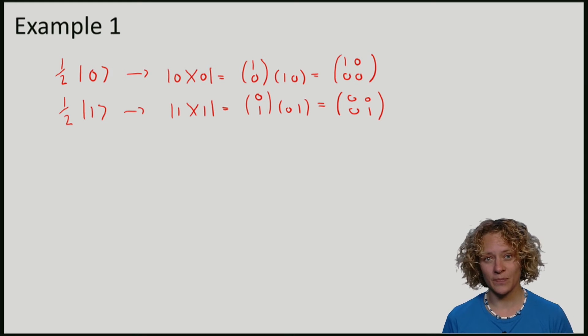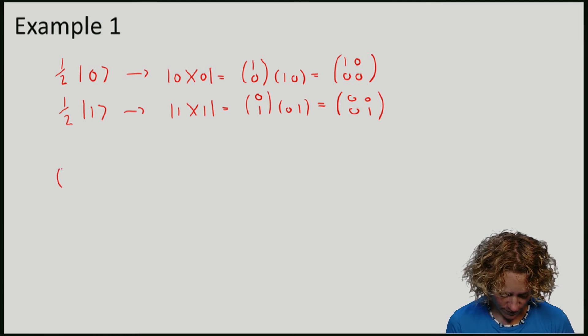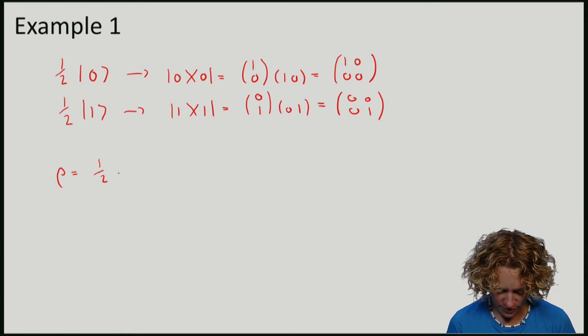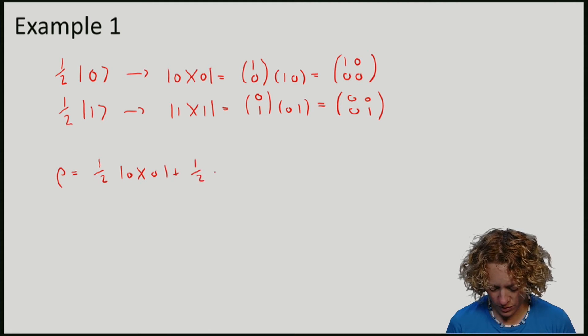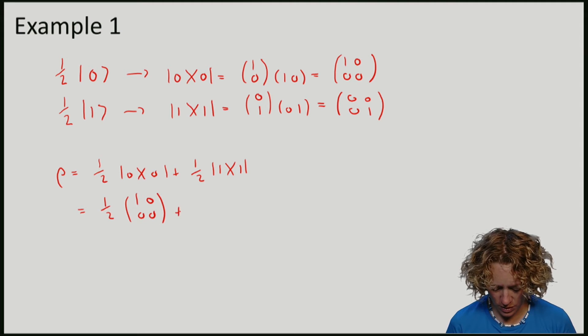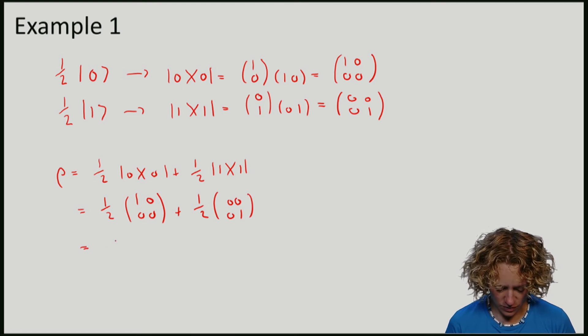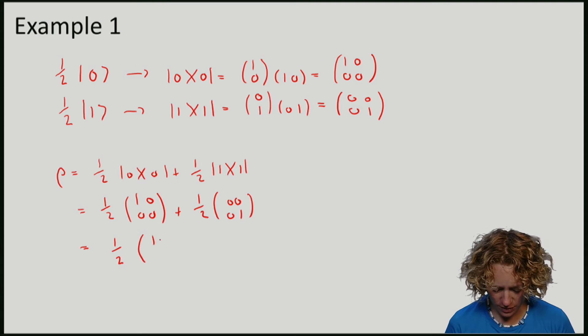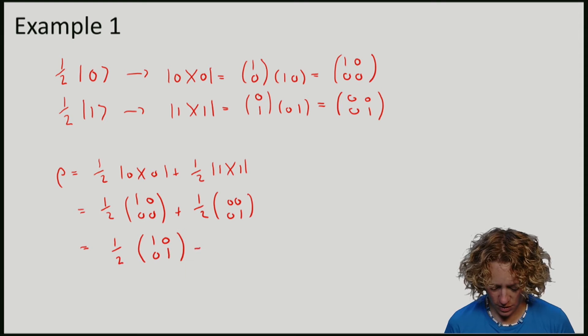To compute the density matrix we can compute the average of these two matrices. So half times (1, 0, 0, 0) plus half times (0, 0, 0, 1), which gives me half times (1, 0, 0, 1), which is the identity matrix over 2.